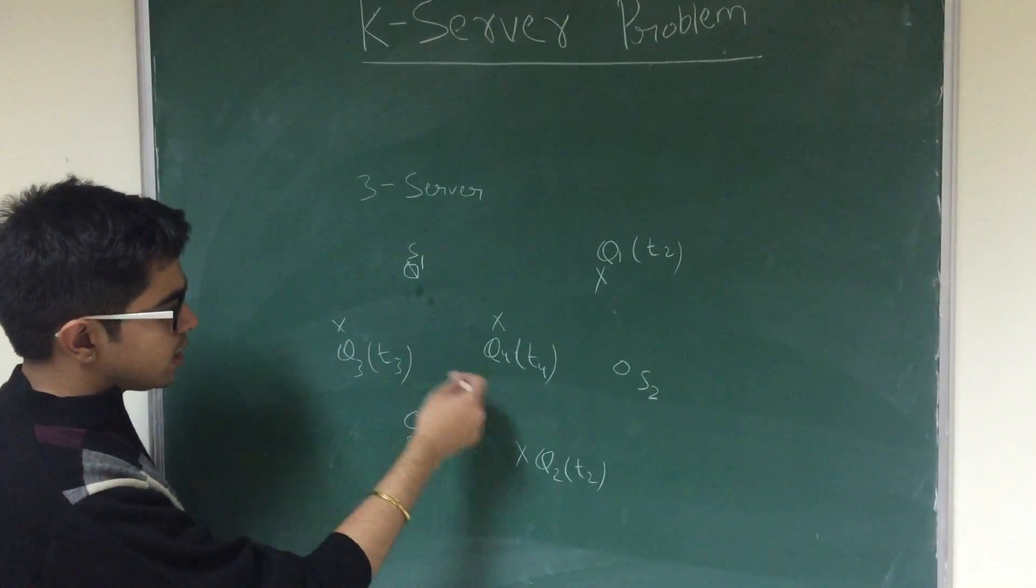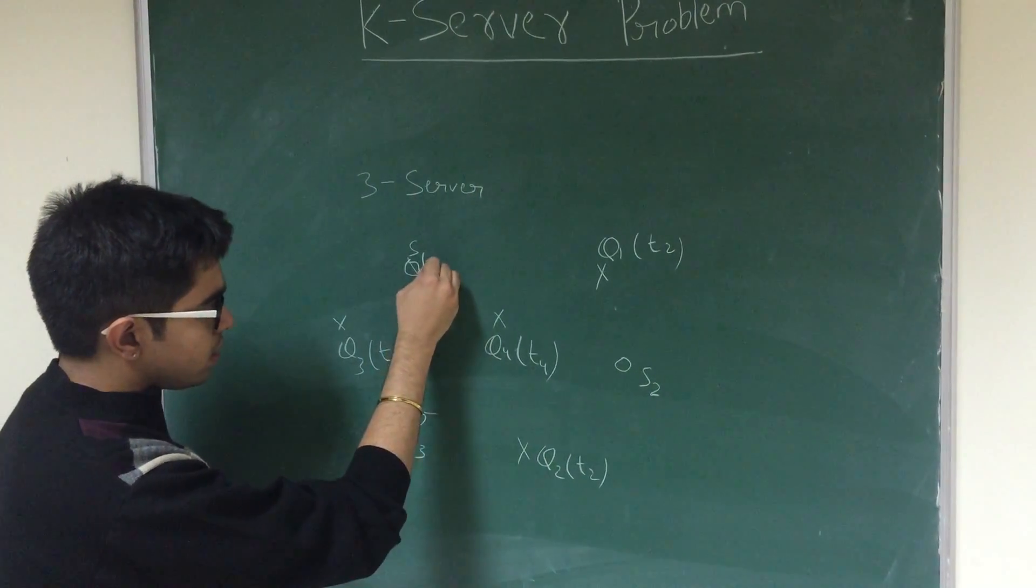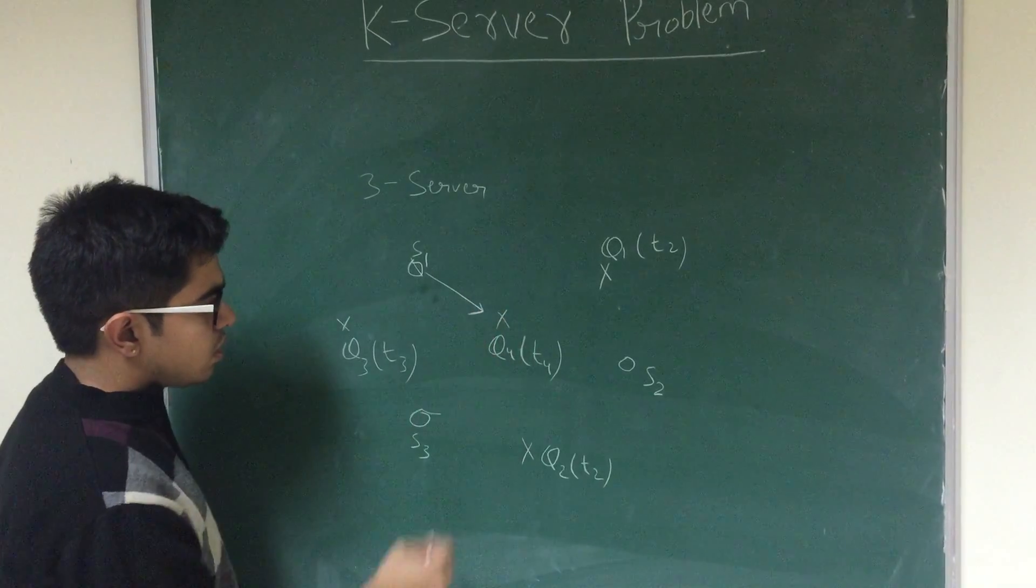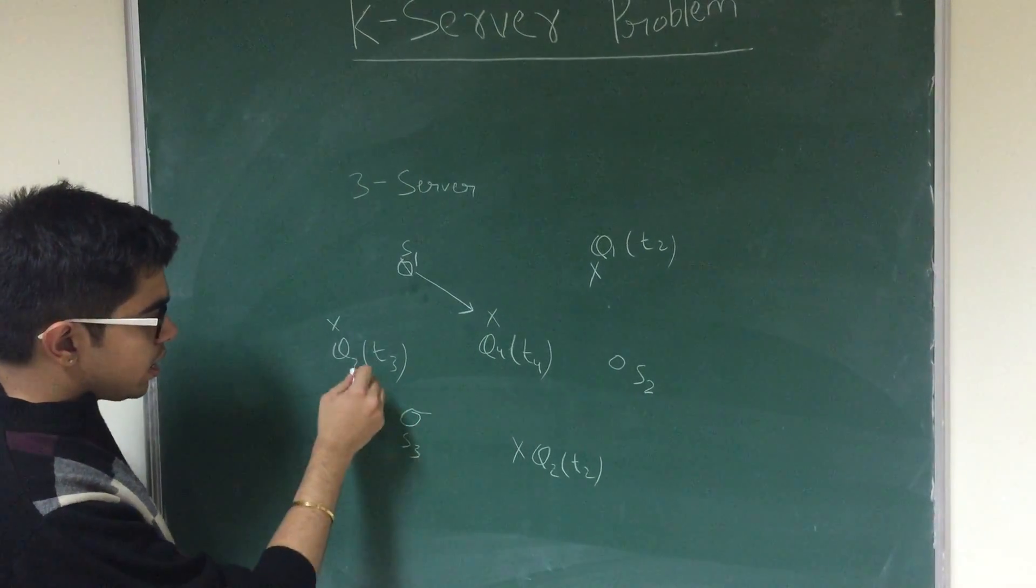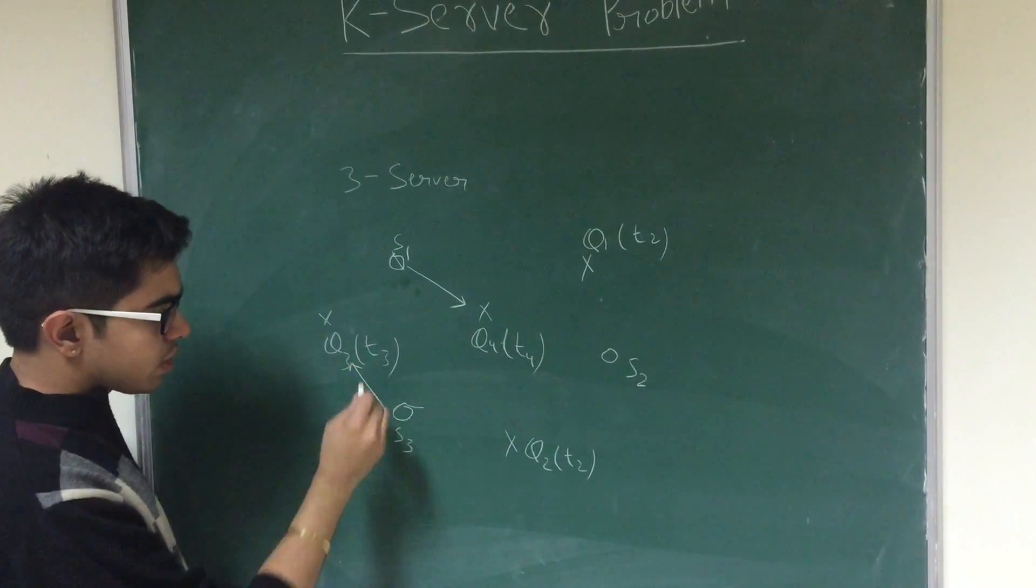So just for instance, in this particular scenario, let's say I'll assign S1 to q2, q4, and similarly I'll assign other servers to the corresponding request.